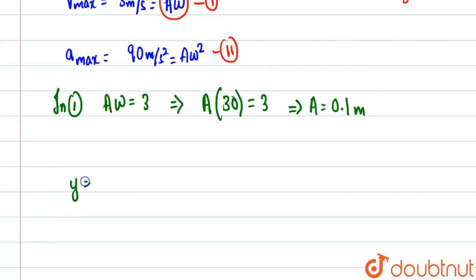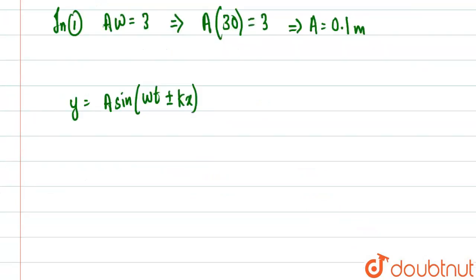So basically we got everything: A and ω. And a general form of wave is y = A sin(ωt ± kx). This is the general form of the wave where k is the wave number.